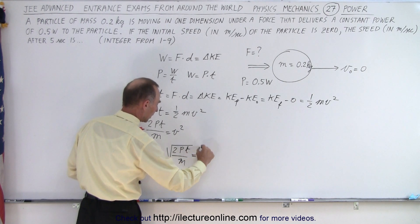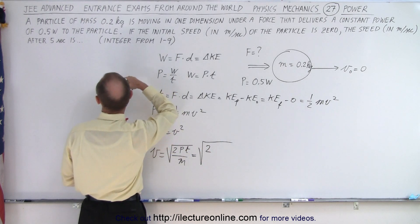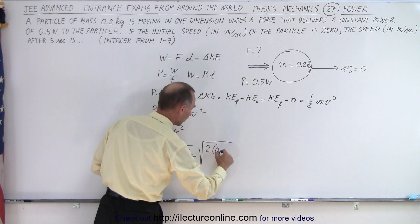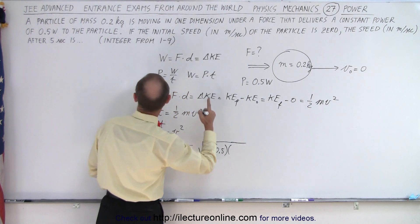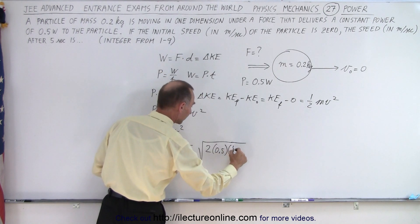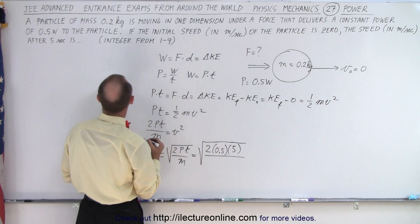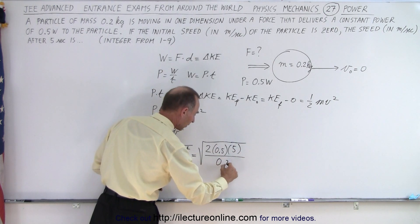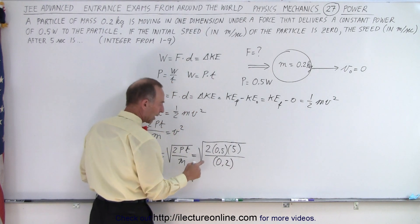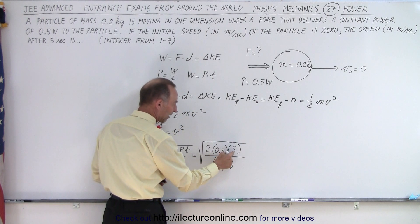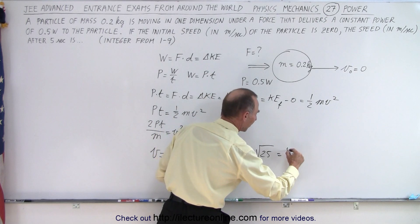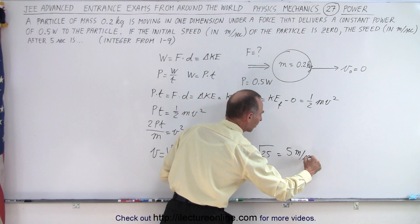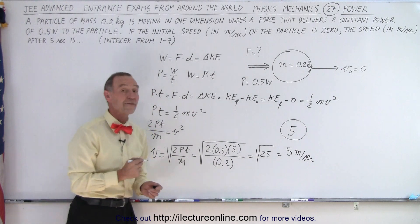The power is 0.5, the time is 5 seconds, and the mass is equal to 0.2 kilograms. So we have 2 times 0.5, which is 1 — times 5 divided by 0.2 — that's actually 5 times 5, which is equal to the square root of 25, which is equal to 5 meters per second. So the answer in this case would be 5.